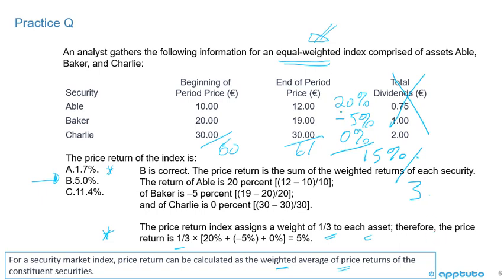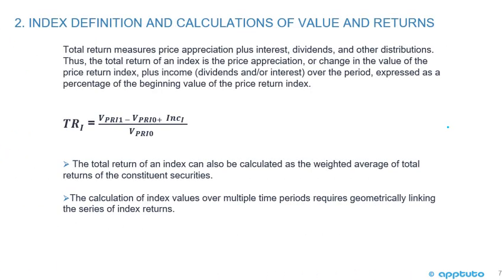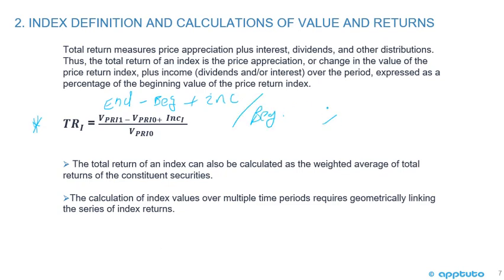Those two questions were placed early to stress the importance of reading carefully. Now let's look at total return. Total return measures price appreciation plus interest, dividends, and other distributions. The total return of an index is the price appreciation plus income (dividends and/or interest) over the period, expressed as a percentage of the beginning value of the Price Return Index: (ending − beginning + income) / beginning.